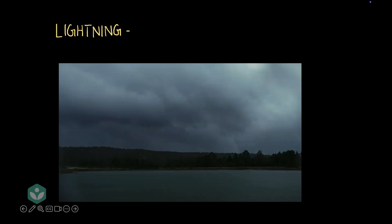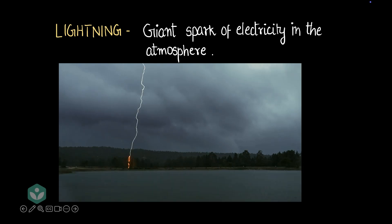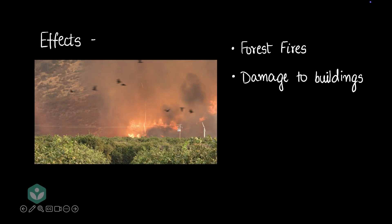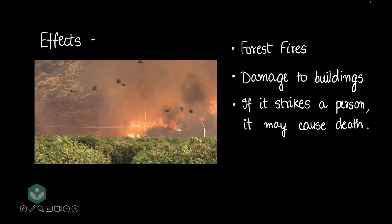Next, we'll discuss lightning. Lightning is a giant spark of electricity in the sky. It looks beautiful and fascinating, but it also often wreaks havoc in different places. Forest fires can be started by lightning — when lightning strikes a tree, it can catch fire, and that fire can spread to cause large forest fires. Lightning can also damage buildings, and if lightning strikes a person, it may cause death as well.